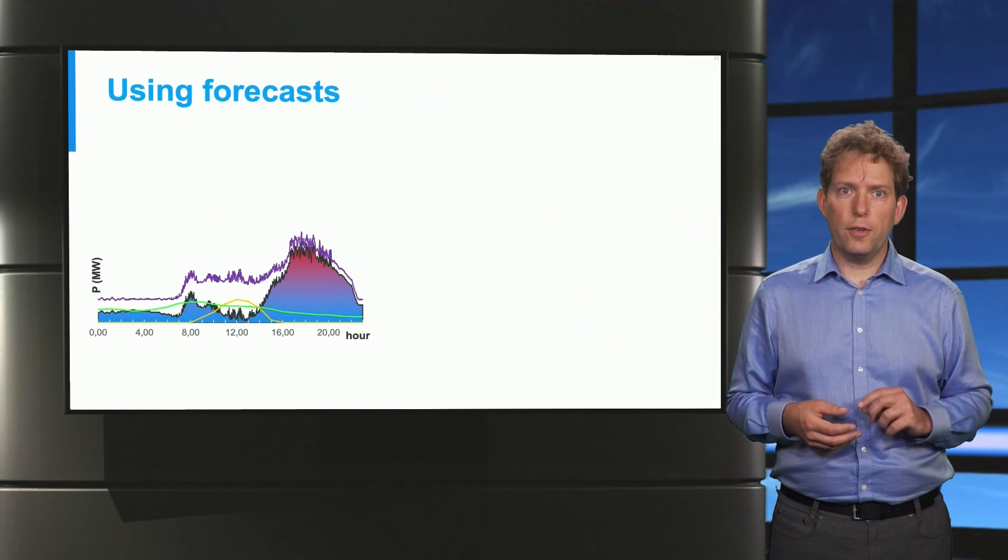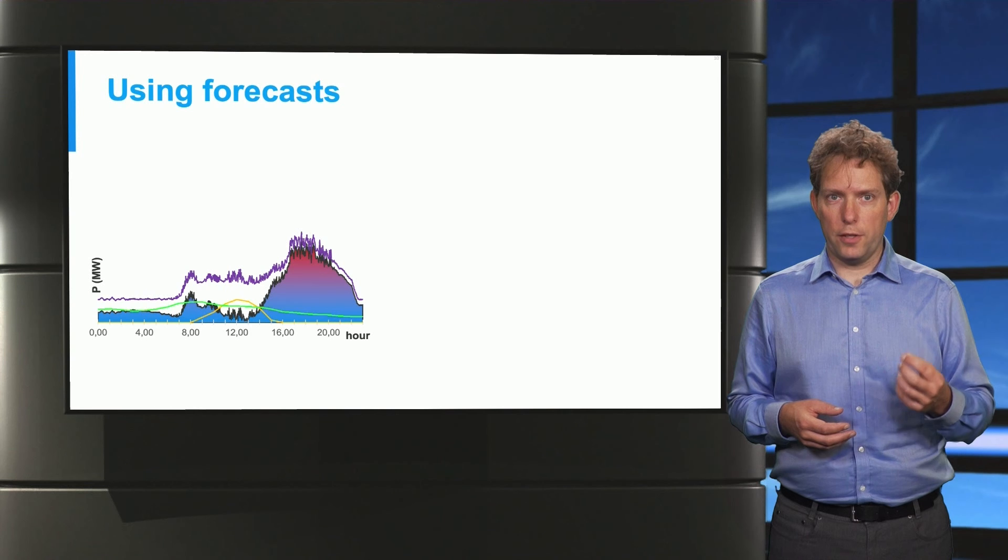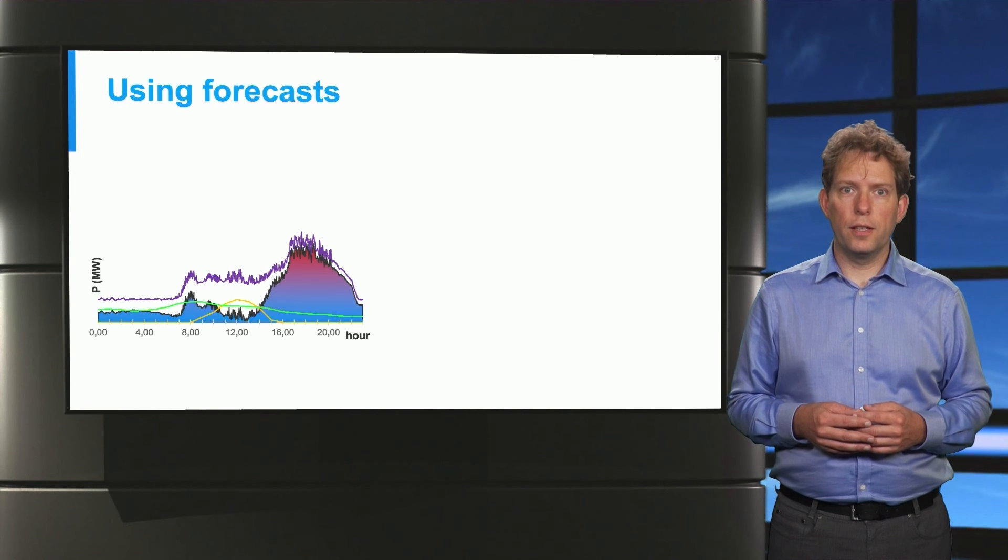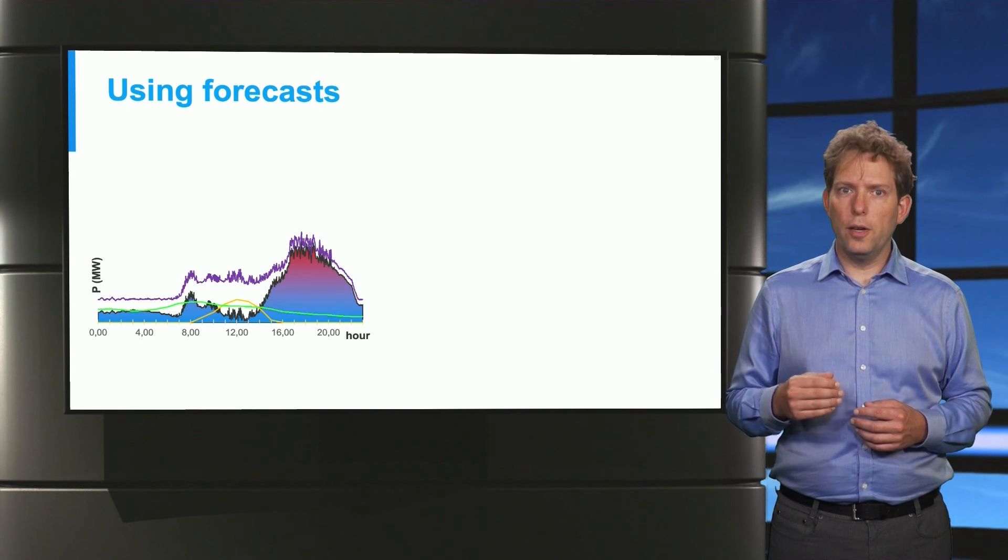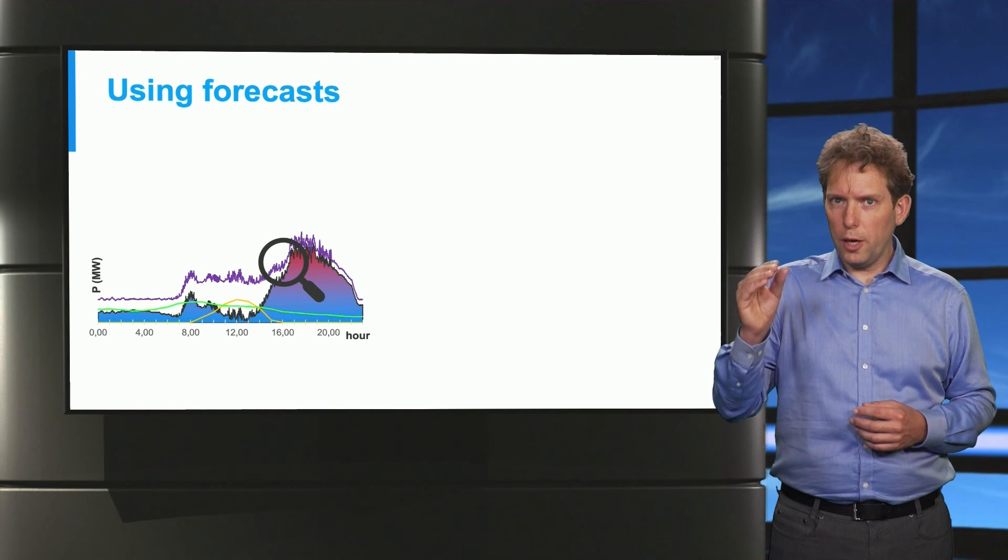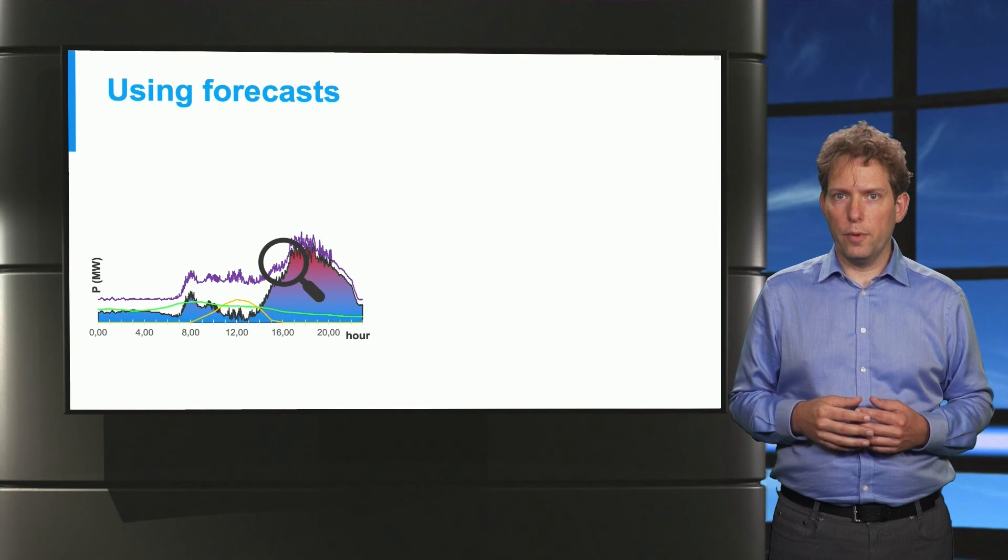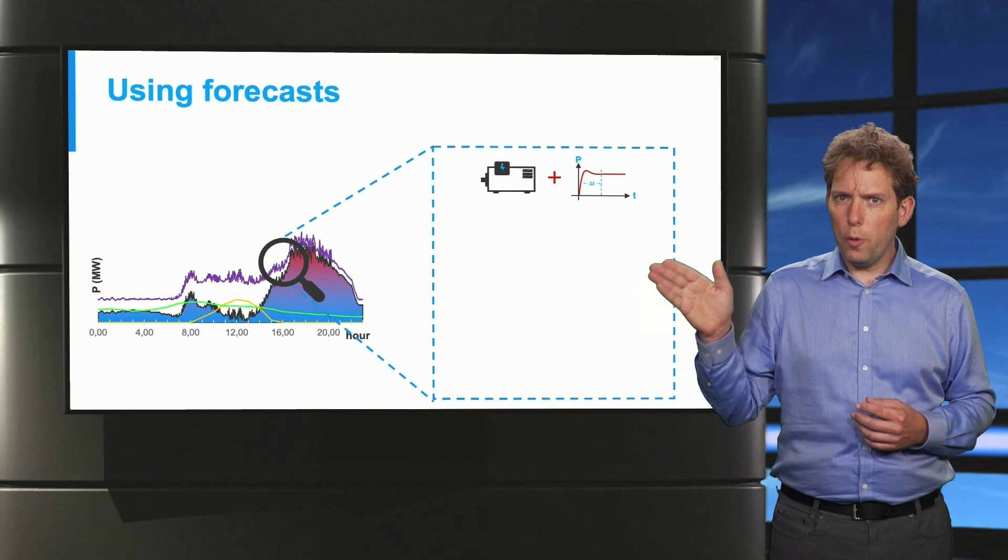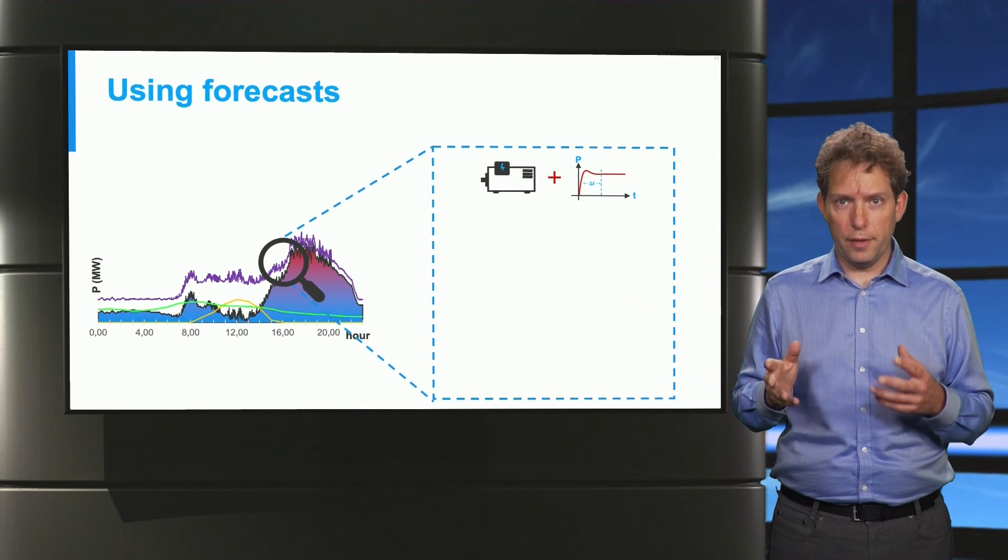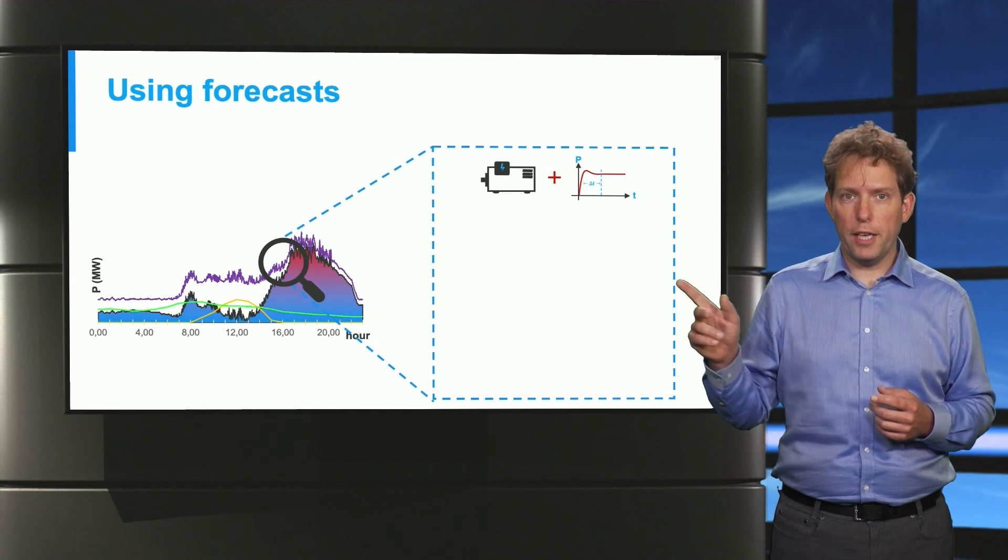What I do want to point out is the importance of forecasts in dispatch decisions. When we want to determine the economic dispatch for this system, we need to deal with sharp changes in power requirements. For example here, in the late afternoon. So how should we optimally use the resources that we have to deal with this rapid variation?